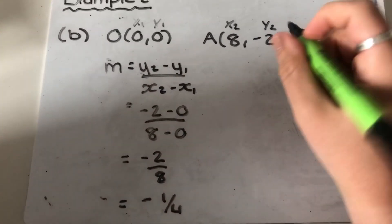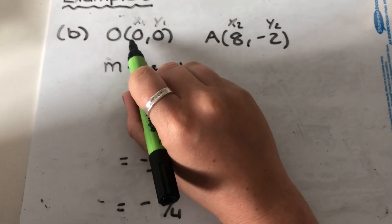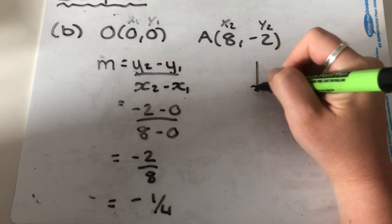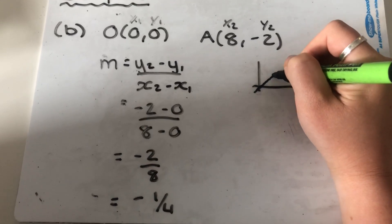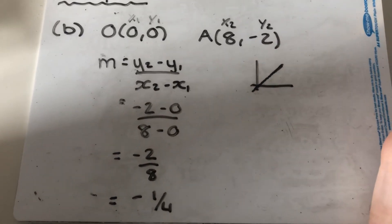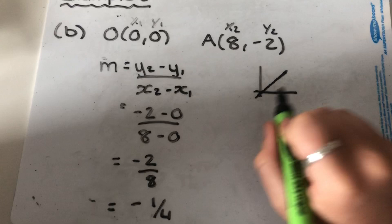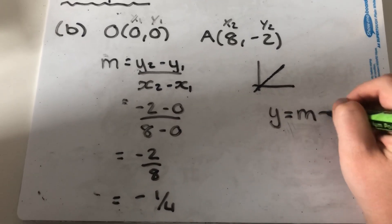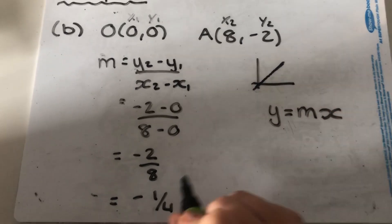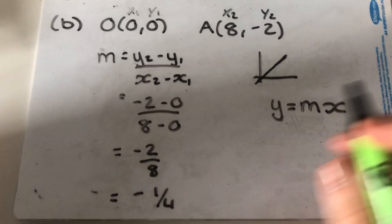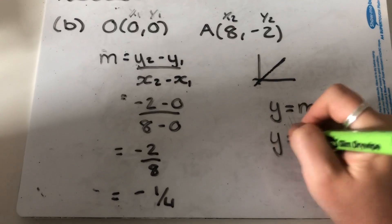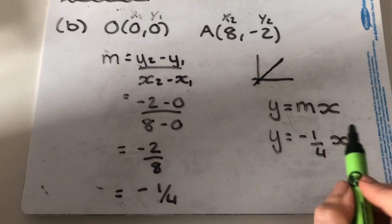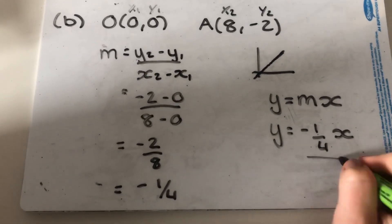It's a straight line that's passing through the origin. On your graph, the origin is where your two axes cross and your straight line is going to be passing through that. Any line that passes through the origin has the equation y is equal to mx, where m is the gradient. We know that the gradient is negative a quarter, so it's just going to be y is equal to negative a quarter x, because we're just replacing m with our gradient.